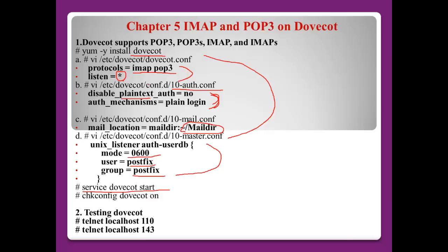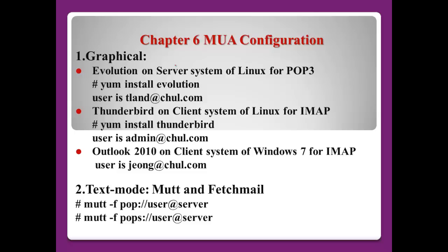Now, number two - testing. We configured Dovecot to support two protocols: IMAP and POP3. We can test using the exact port. Port 110 is POP3, and port 143 is IMAP. After that, I will show you how to configure the MUA.